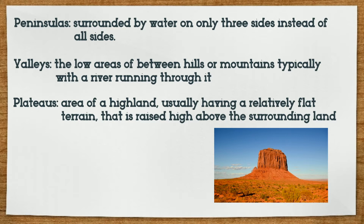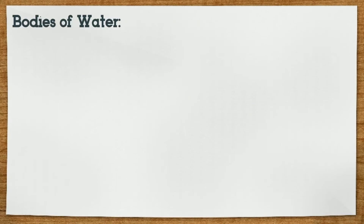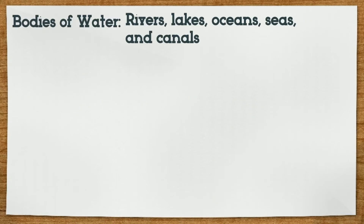usually having a relatively flat terrain that's raised high above the surrounding land. It is different from a mountain because plateaus are flat on the top. You may see a lot of plateaus if you ever visit the Grand Canyon. Now, let's explore the bodies of water. Rivers, lakes, oceans, seas, and canals are all bodies of water.